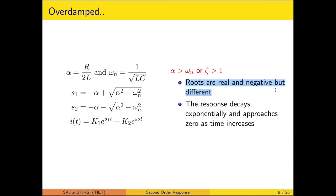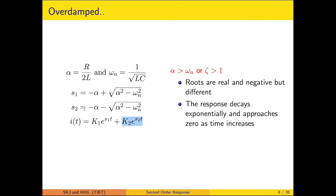When the roots are real and negative, the response decays exponentially and decreases to zero as time progresses. The general expression is k1 e to the power S1 t plus k2 e to the power S2 t. S2 comes out to be large negative, S1 smaller negative, so the contribution due to S2 decays at a much faster rate.